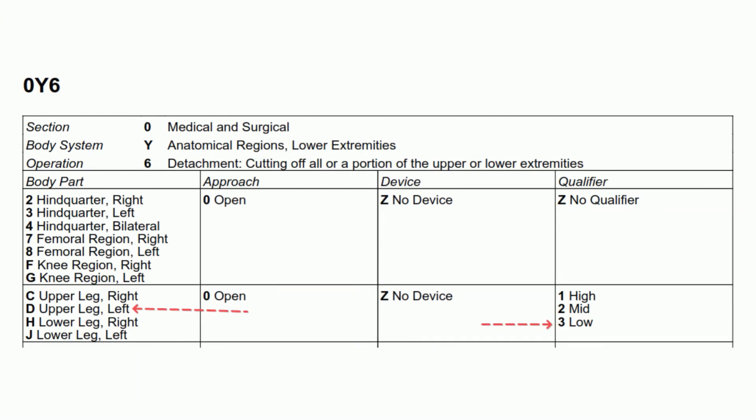The corresponding PCS table shows: the section is medical and surgical, the body system is anatomical regions lower extremities, the root operation is detachment — cutting off all or a portion of the upper or lower extremities, and the body part is left upper leg. The approach is open. The sixth character is no device, because in PCS the device value applies only when an actual device is left inside the body after the procedure — nothing is left after an amputation. The seventh character qualifier is low amputation.